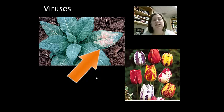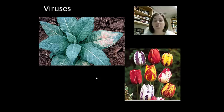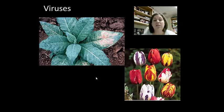The leaves are what do the photosynthesis, and so this can ultimately kill the plant if it cannot make its own food. Sometimes plants are given viruses on purpose. Rembrandt tulips have a unique coloration, and this coloration is due to a virus. But the plant is weakened because of this, and because the virus is present, the plant doesn't live very long. This gives you an example of how we can actually use a virus to create something unique and different, like you see here with these tulips.